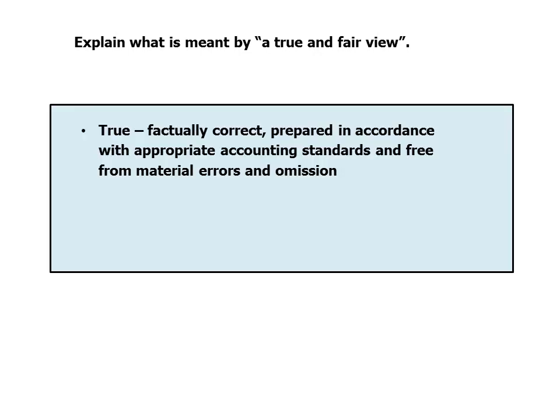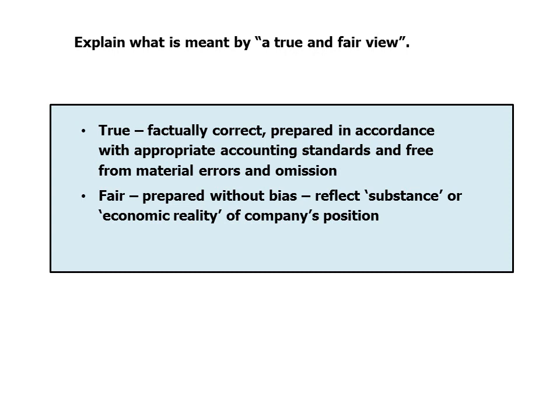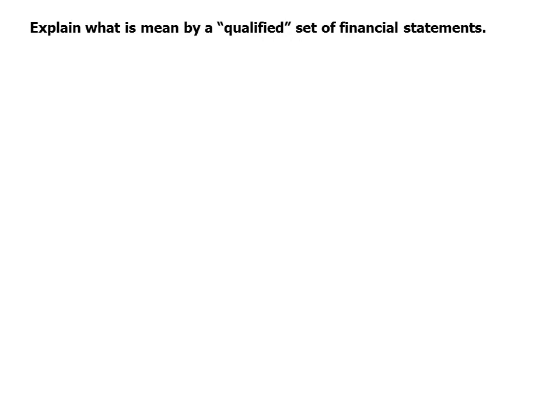What is meant by a true and fair view? True, in terms of financial reports, implies factually correct and prepared in accordance with appropriate accounting standards, and free from material errors and omissions. And fair means prepared without bias, so that the financial statements reflect the substance or economic reality of the company's position.